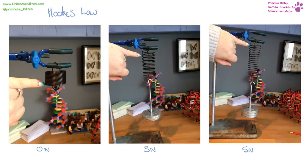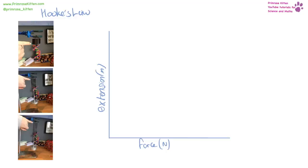When you exert a force on an object, it is going to be squashed, stretched, or deformed in some way. This is Hooke's Law. In the experiment, a spring has weights added to the bottom — the length of the spring increases the more weights are added. We can plot this as a direct line until we reach the limit of proportionality.